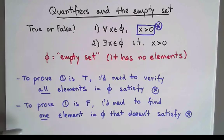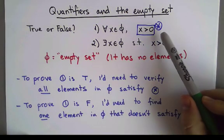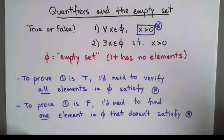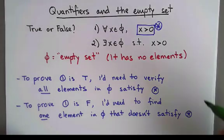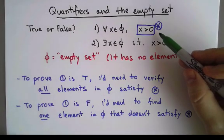The answer is I can do this, but not that. Can I verify that all the elements in the empty set satisfy that? Yes, there are exactly zero elements in the empty set, and all zero elements in the empty set satisfy that. So all the elements in the empty set satisfy that.